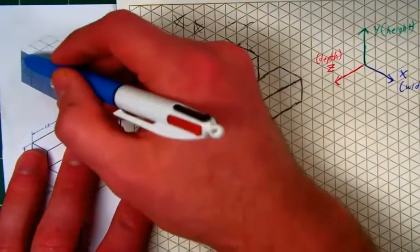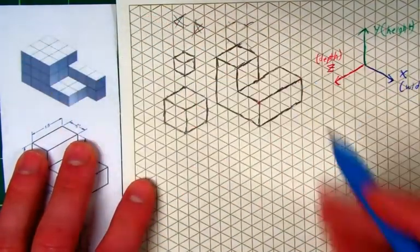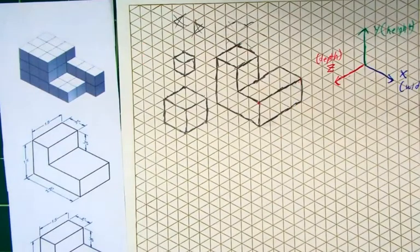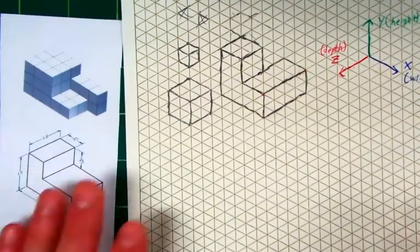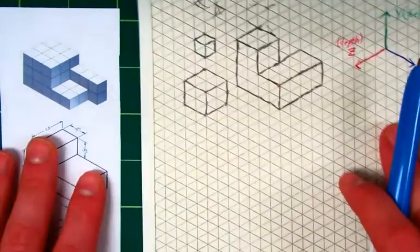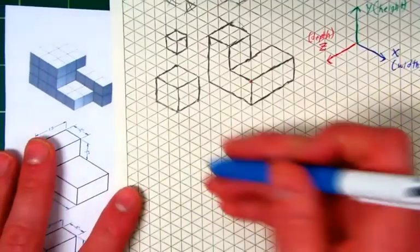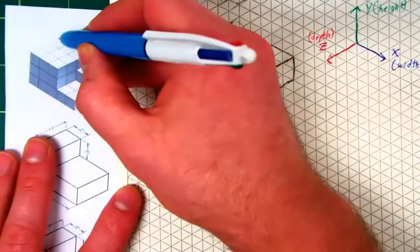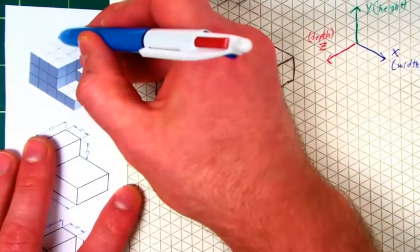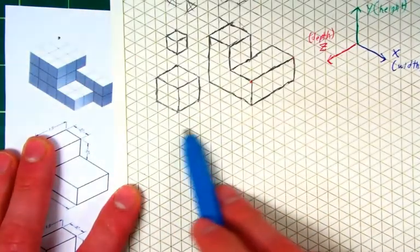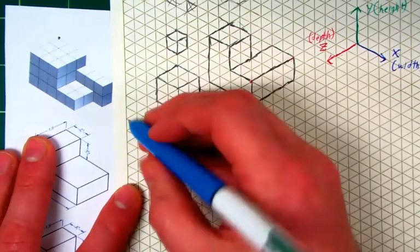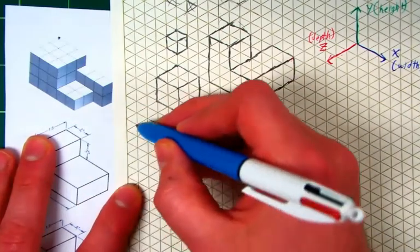Follow along with me and maybe watch it once first before you do it to get the idea. Let's move down the paper and start by drawing the top corner—this corner right here. I'm going to start it down here and make sure I have plenty of room.